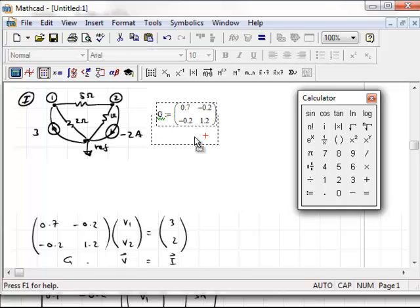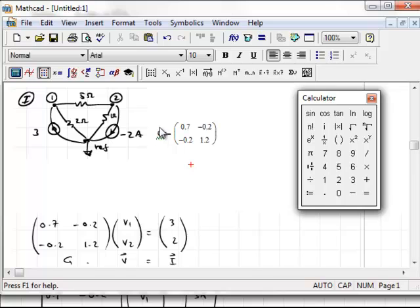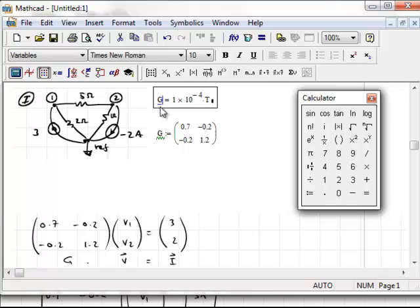Notice that this goes green. And the reason is that it's telling me here that G is a predefined variable. The reason it's predefined is actually G is a built-in unit. G stands for Gauss, and one Gauss is one ten-thousandth of a Tesla.